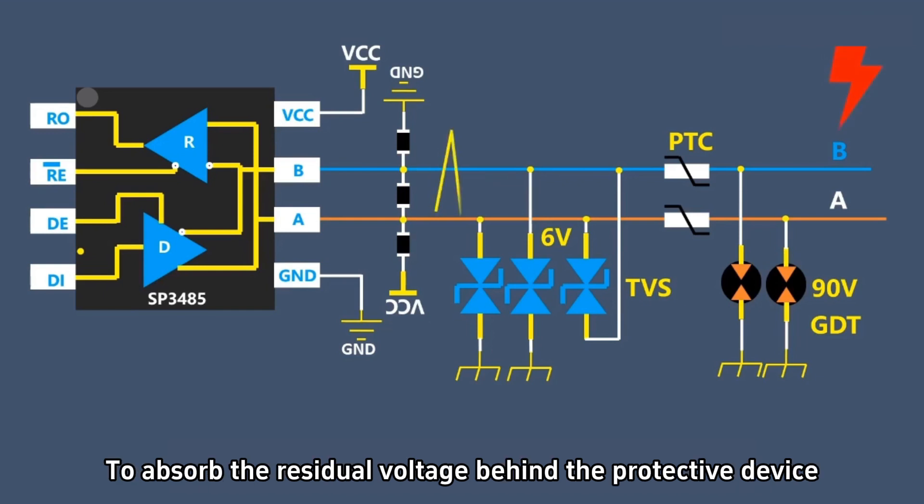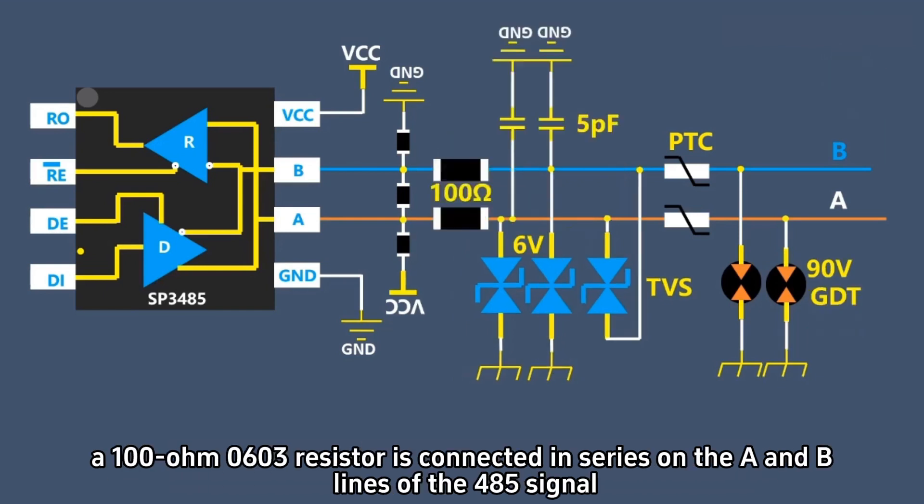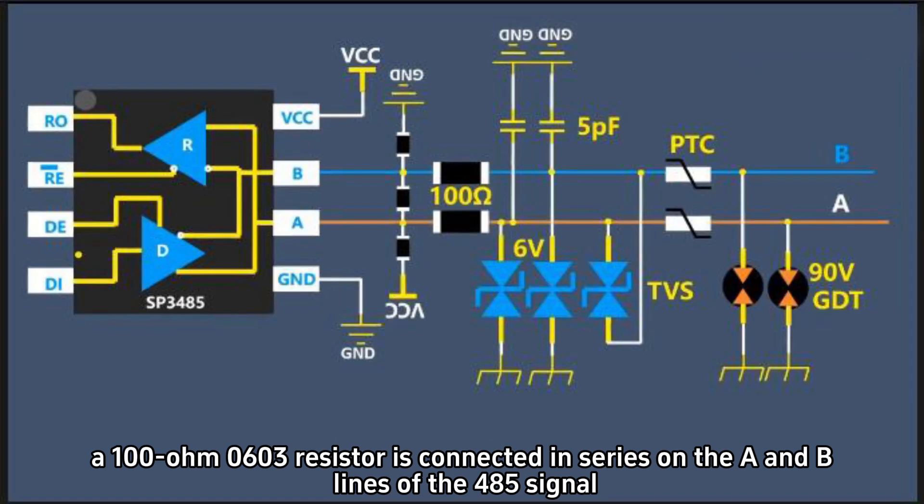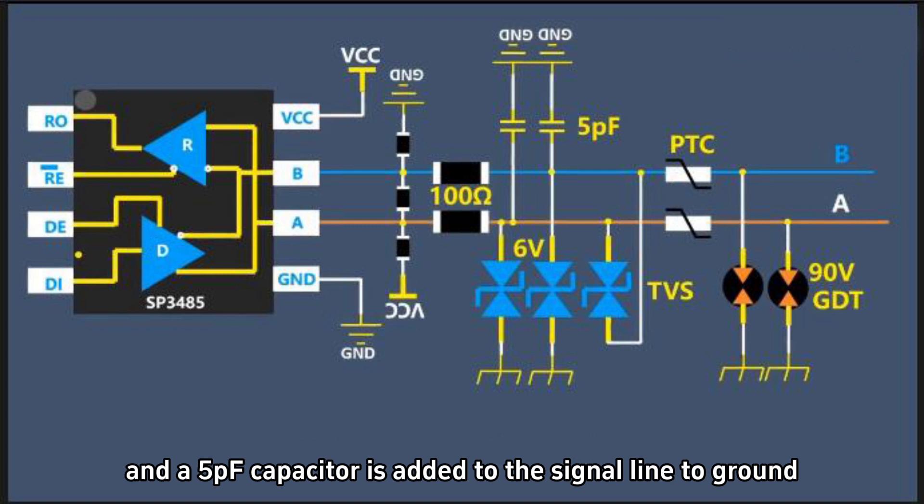To absorb the residual voltage behind the protective device, a 100-ohm 0603 resistor is connected in series on the A and B lines of the 485 signal, and a 5pF capacitor is added to the signal line to ground.